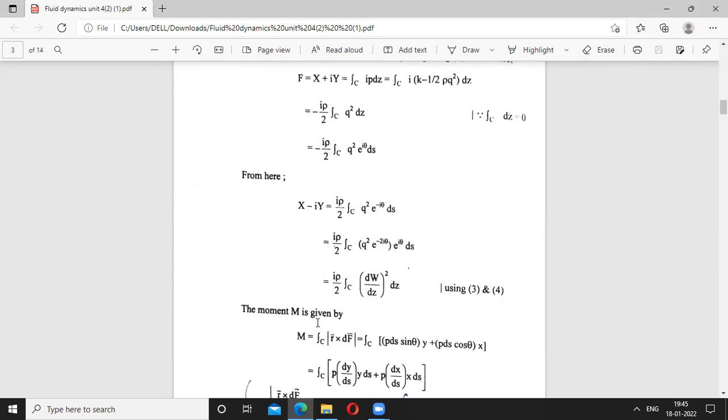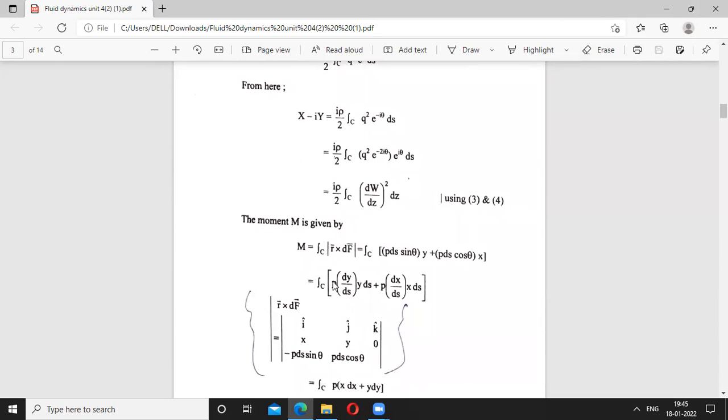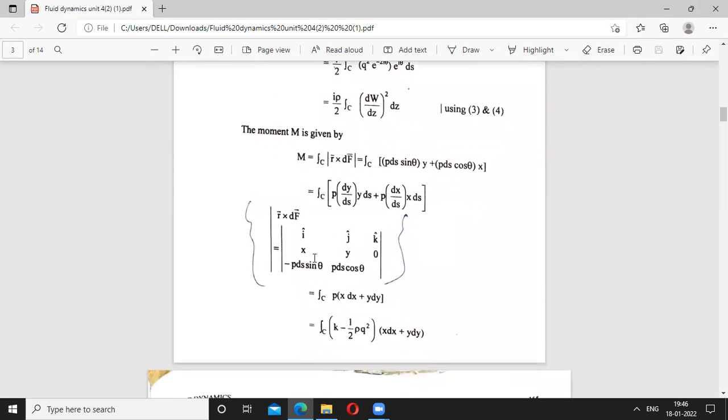Now moment M is given by this formula: integration of R cross Df. This formula moment M is given by R cross Df. We have to put the values.